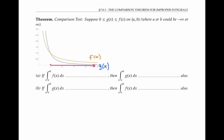Now, if we already know that the integral of f of x on this interval converges to a finite number, then g of x, which is less than f of x, also has to converge to a finite number. So if the integral of f of x converges, then g of x converges. If we turn this around, we can say that if g of x diverges — so it doesn't converge to a finite number — then f of x has to diverge also.